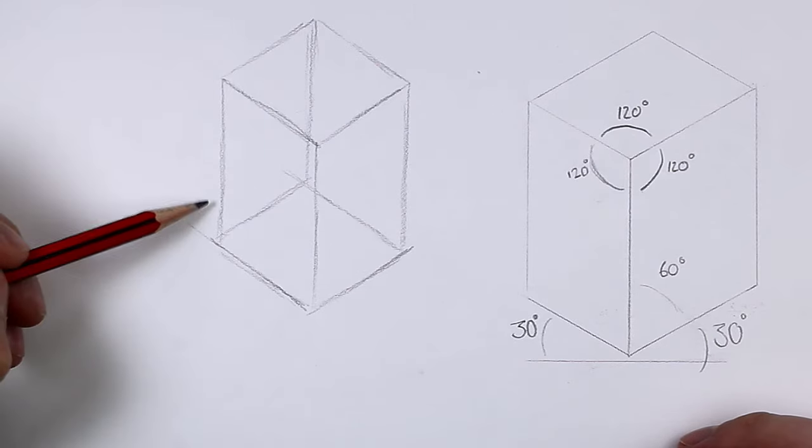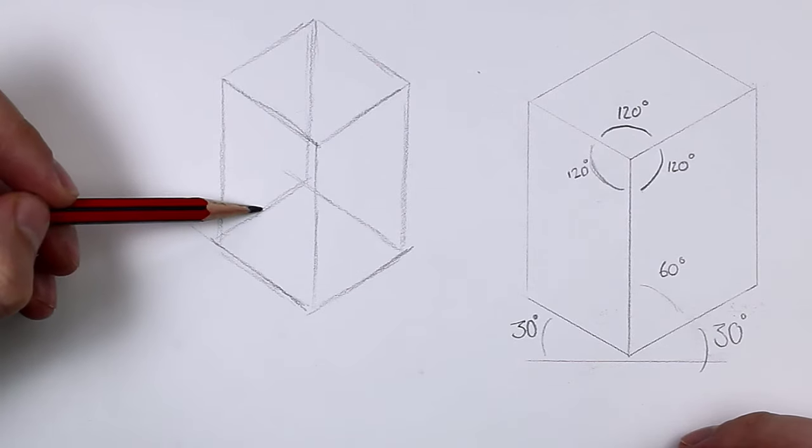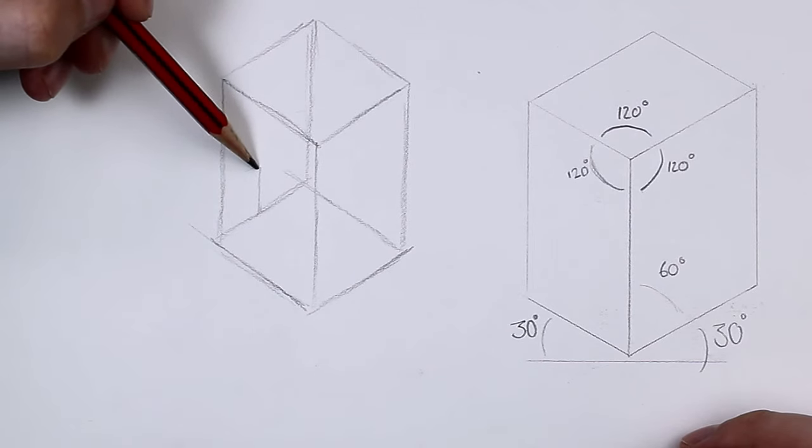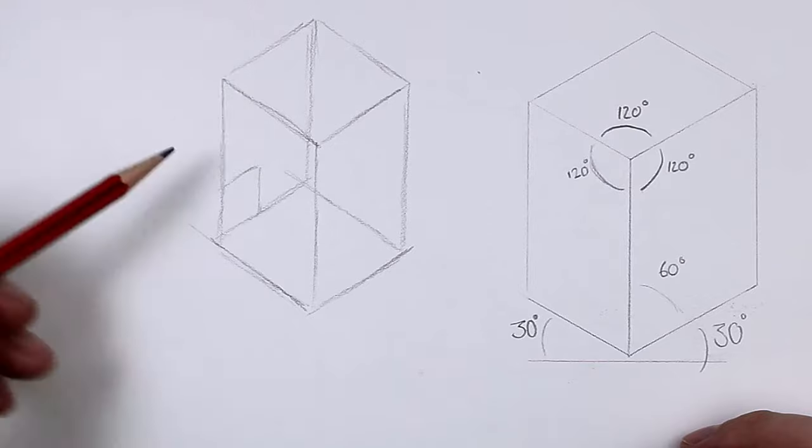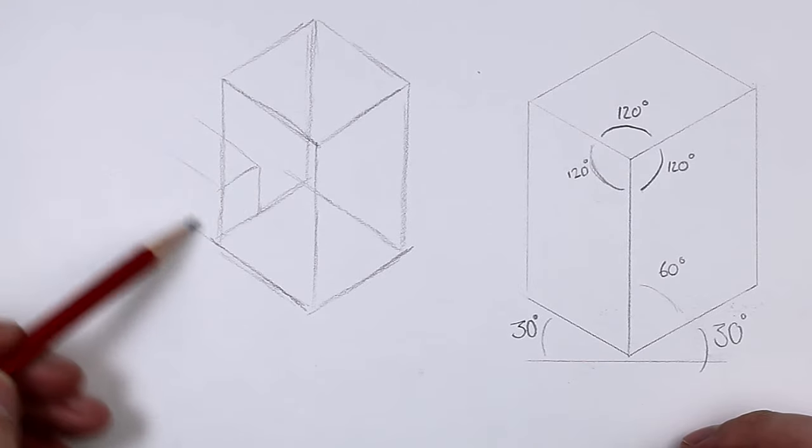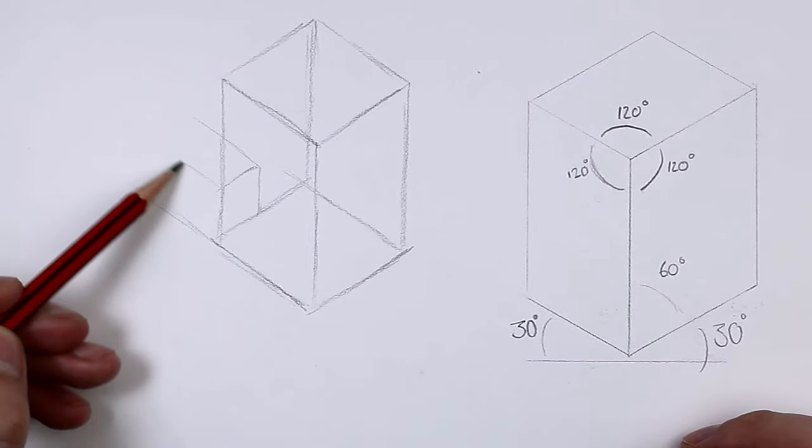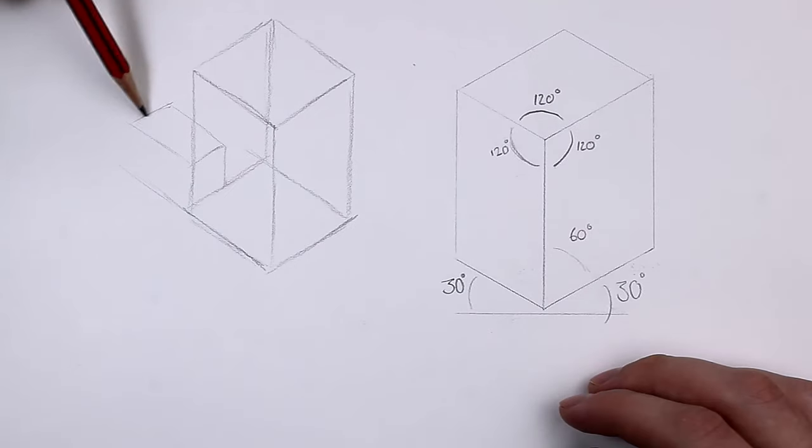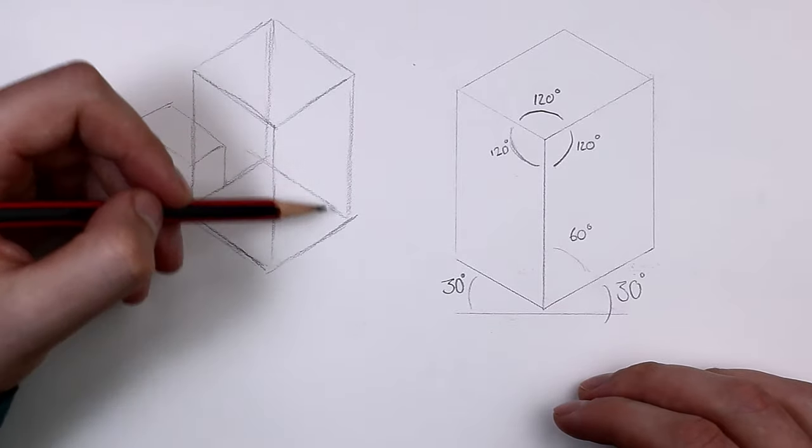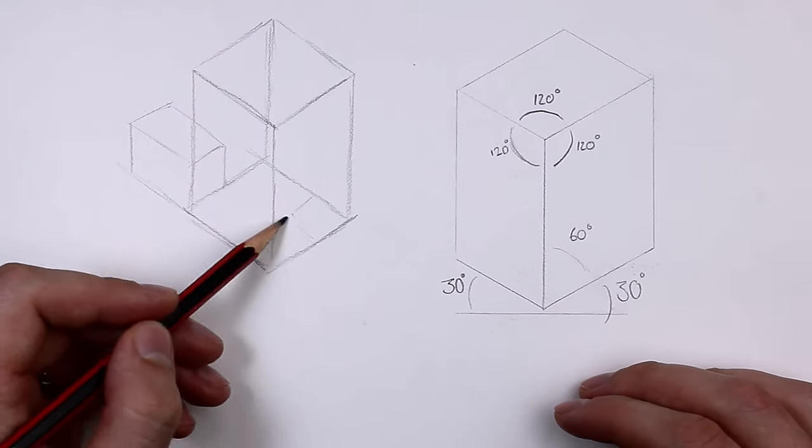So for example, if I wanted to add another cuboid coming off this direction, and I wanted to make it look like it was attached to this one, I could do that by drawing it on that side and then carrying it on. Remember, if you've drawn your lines lightly, you can easily rub out the bits you don't need at the end.